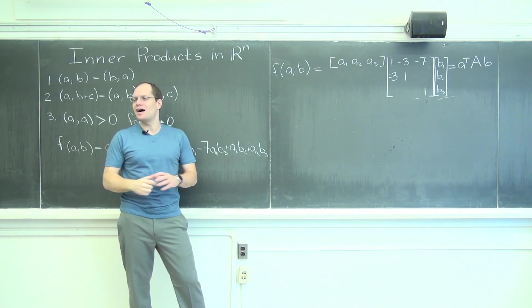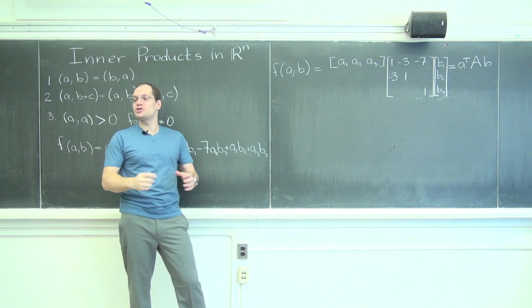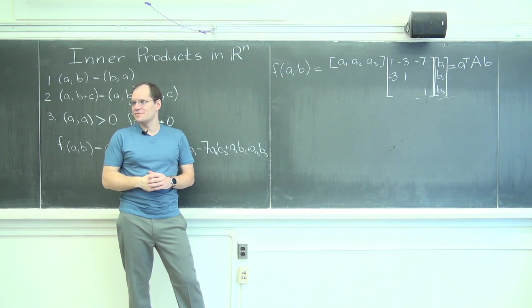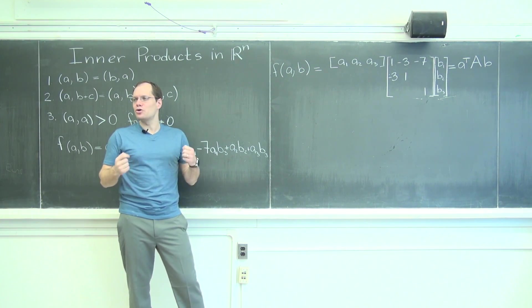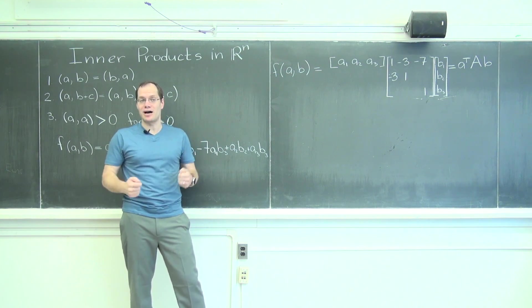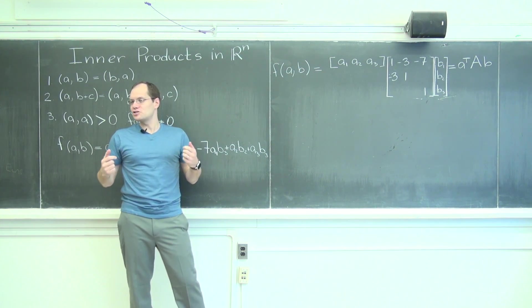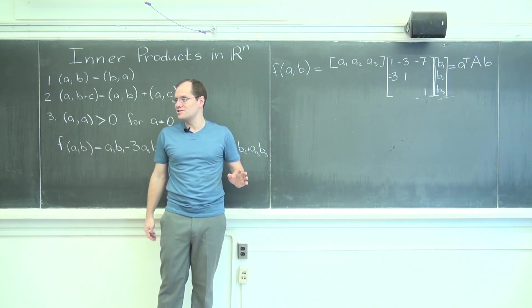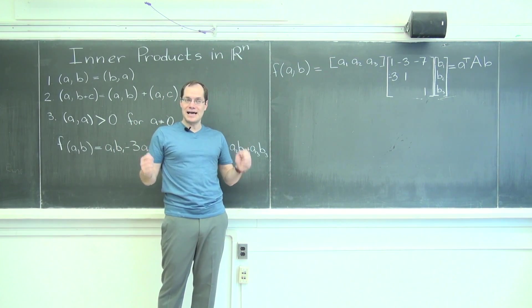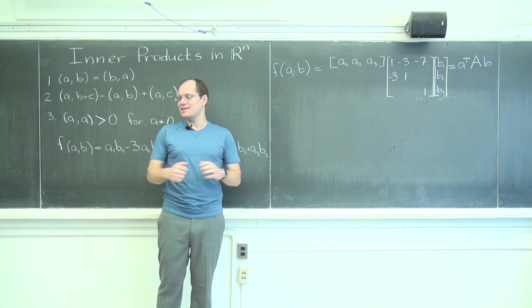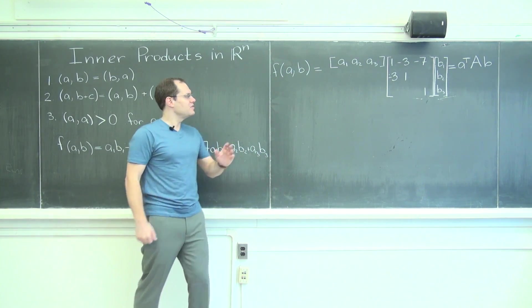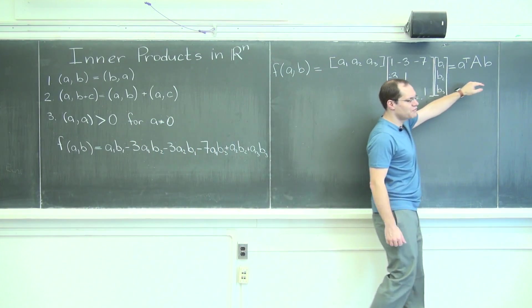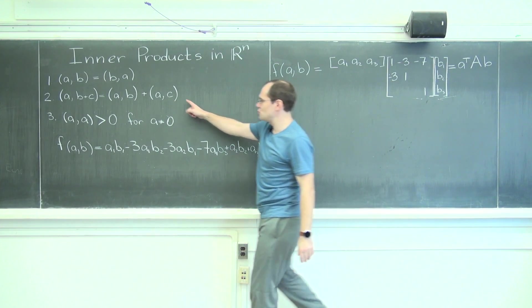If there were no inner products, there would be no transposes. You need the transpose in order to be able to talk about inner products in matrix form. And talking about it in matrix form is, of course, beneficial for all the reasons I won't repeat right now. But that's when the transpose makes its entrance. And the reason why you can always write it in this form is the distributive property.